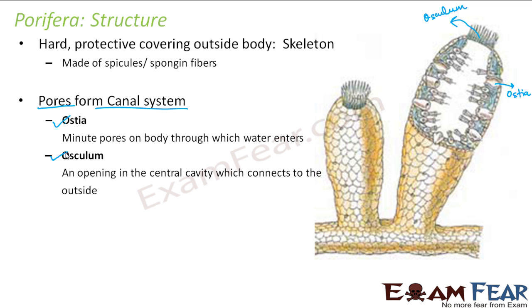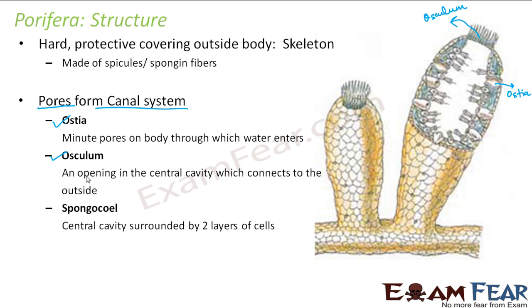Next is the osculum. It is an opening in the central cavity which connects to the outside. This central cavity of the Porifera will have a big opening called the osculum, which opens to the outside. Water enters through the small pores throughout the body into the cavity, and then exits through the osculum. Next is the spongocoel — the central cavity surrounded by two layers of cells.